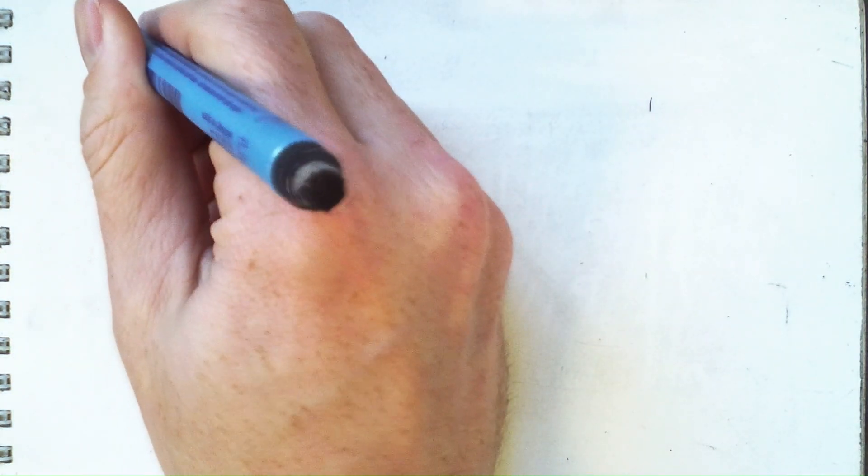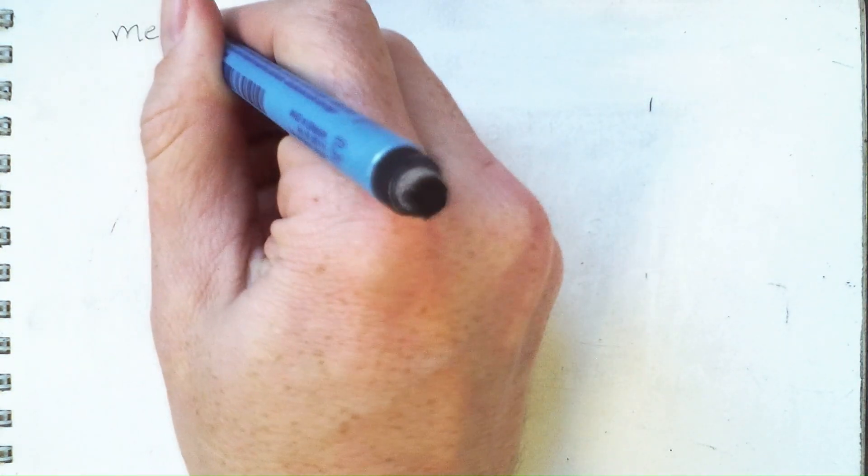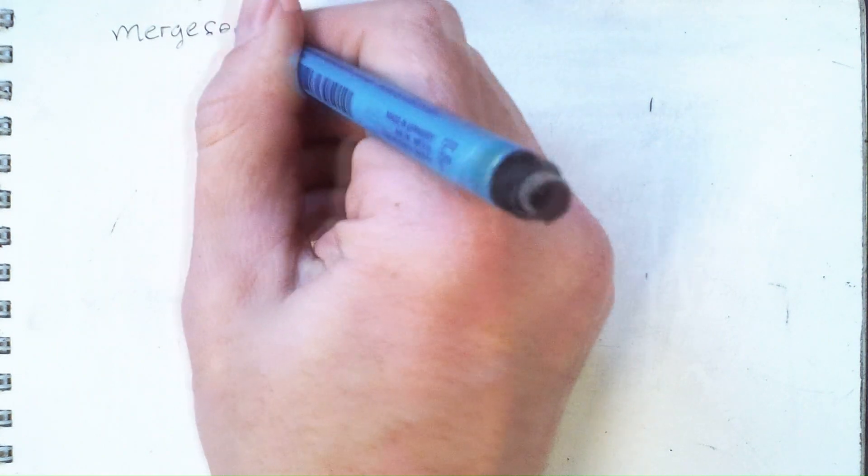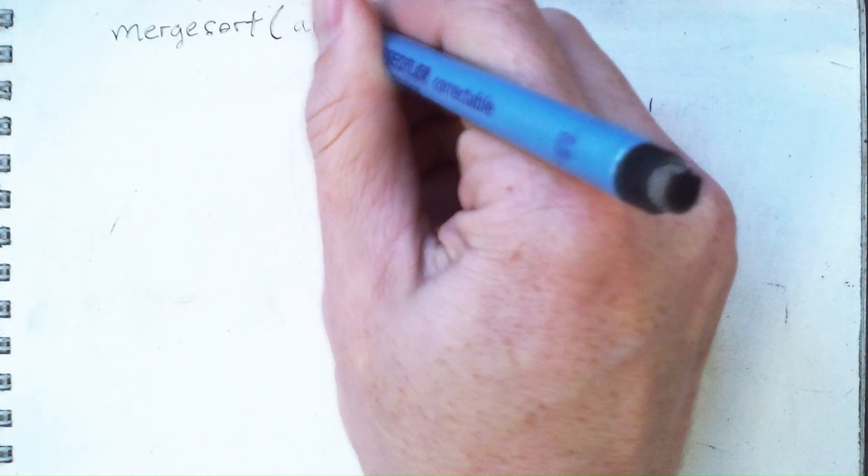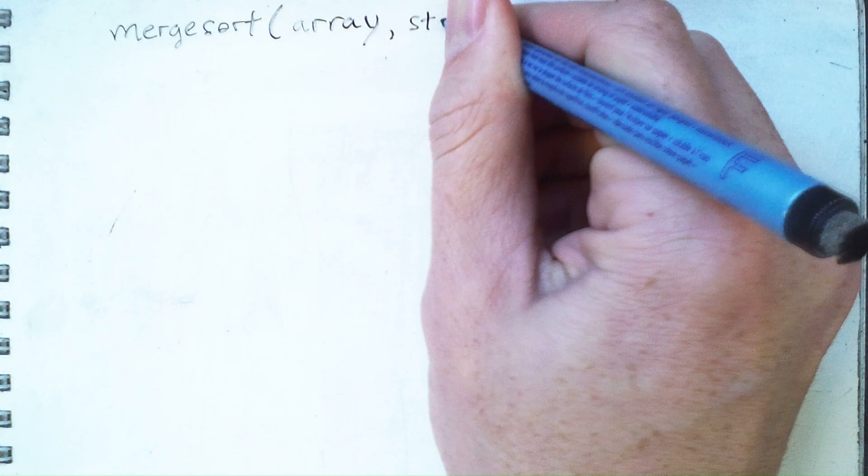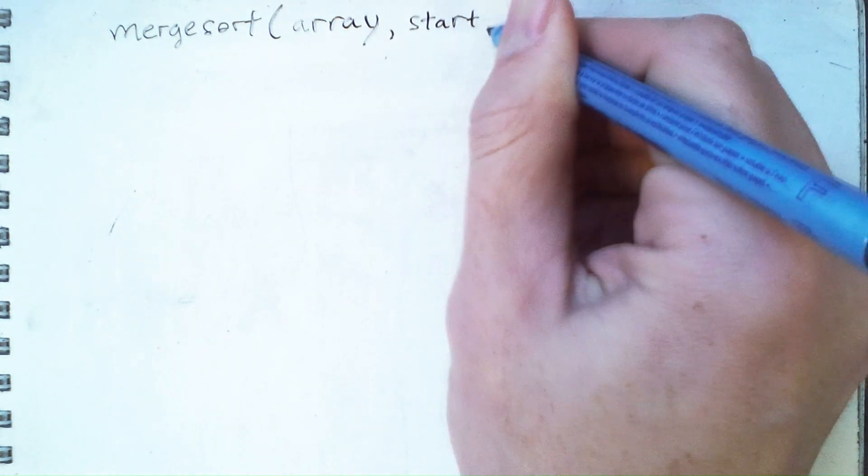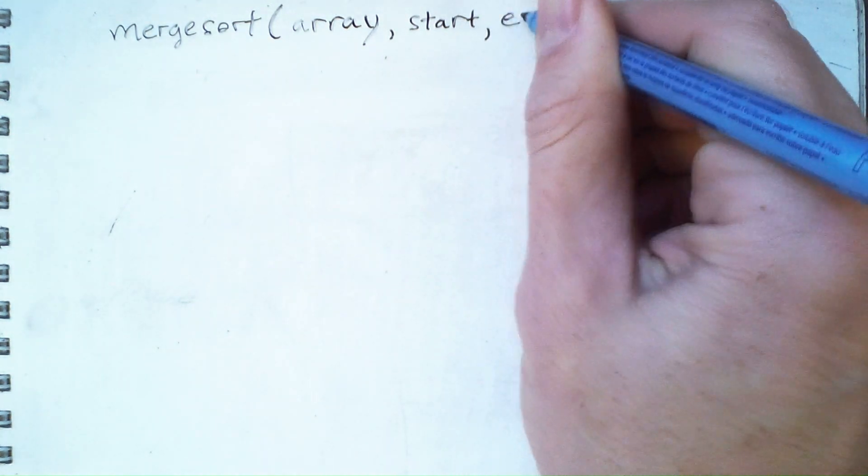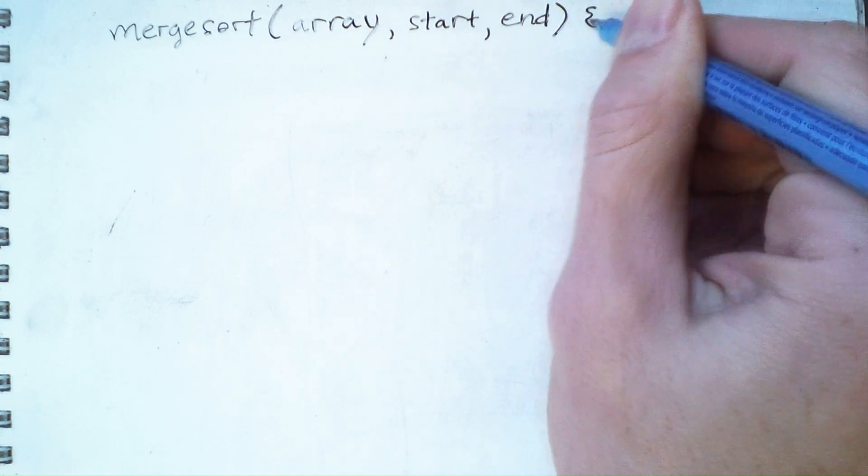So what I'm going to do is write some pseudocode for merge sort and gradually refine it as we go. In this first version, we have the array we want to sort, and then we're going to sort everything between some start index and some end index within the array.